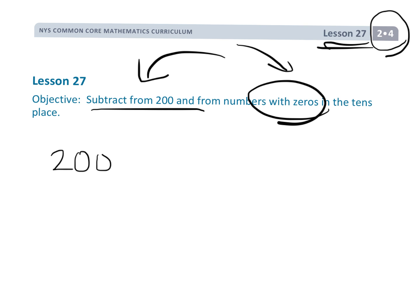Students are going to learn that if they need dots in the ones column, they're going to have to first borrow from the hundreds column and unbundle. So unbundle, leaving one hundred, and now there are ten tens. But that hasn't quite helped in the ones column yet, so unbundle again, leaving nine tens, and now there are ten ones.